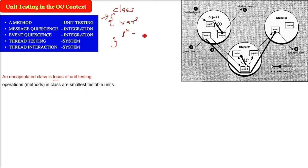The operation or the functions or the method in class, these are the smallest testable units in object-oriented paradigm. The functions, the operations. Because a class may contain a number of different operations, there will not be only one function, there can be multiple functions.